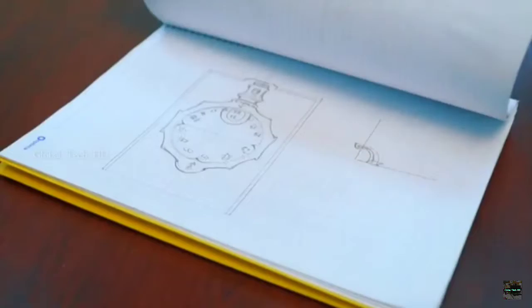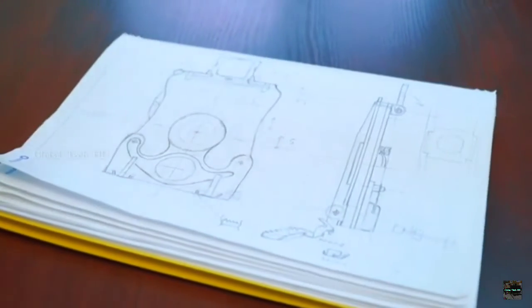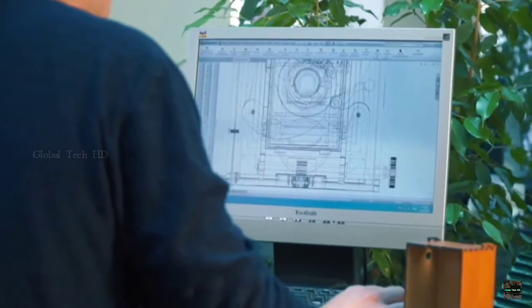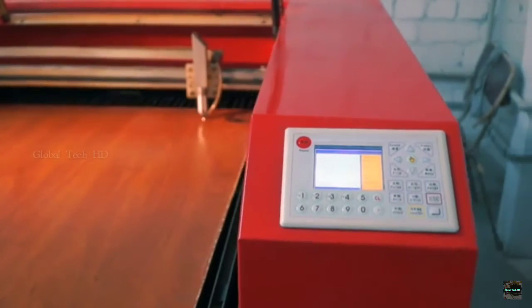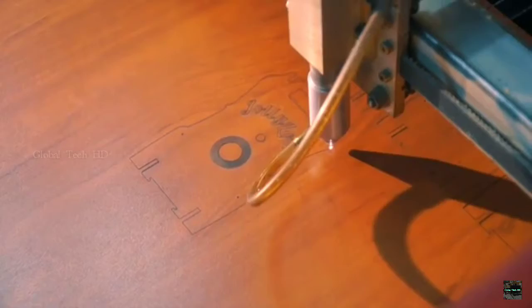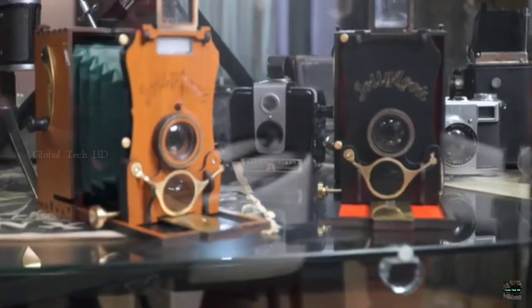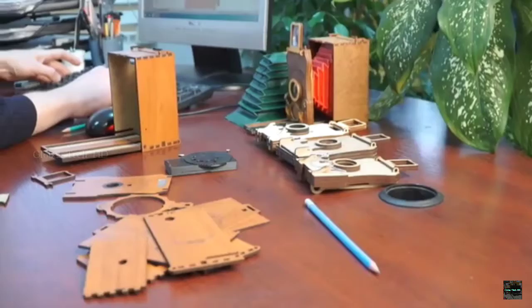We went through an extensive process to design the Jollylook Autumn from initial sketches to full computer aided design. Along the way there were many iterations and prototypes until we achieved a harmonious combination of form and function.